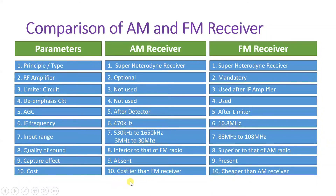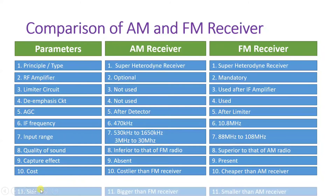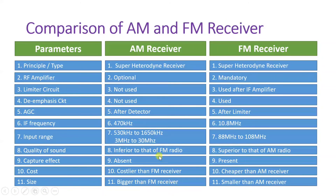When we talk about cost, an AM receiver is costlier than an FM receiver, while an FM receiver is cheaper than an AM receiver. In terms of size, the AM receiver is bigger compared to an FM receiver.